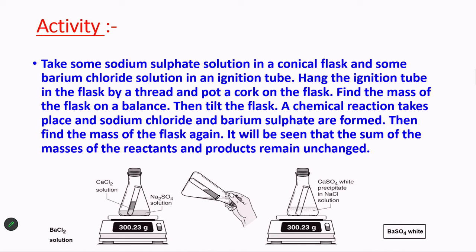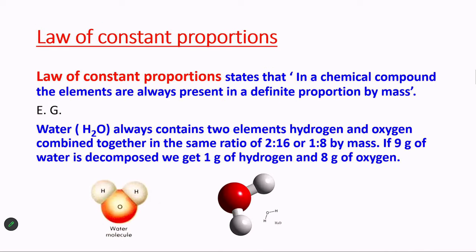Now you must have got some idea of this first law. Let us see what is the second law. This is the law of constant proportions. Whenever a molecule is formed, two different elements combine in a certain proportion and this proportion is never, ever changed. In a chemical combination, the elements are always present in a definite proportion by their mass.